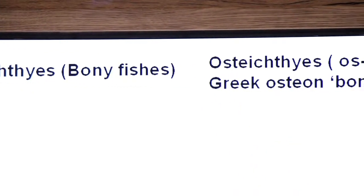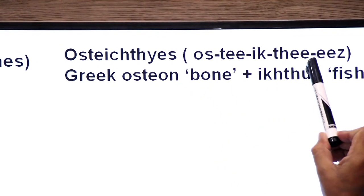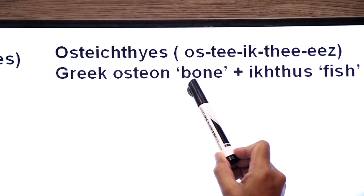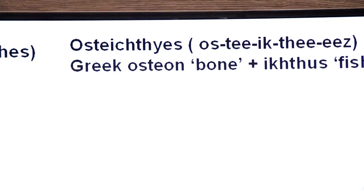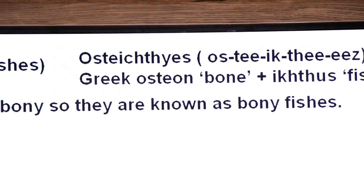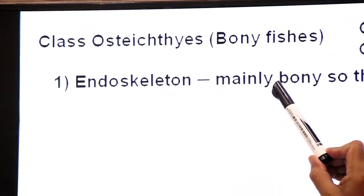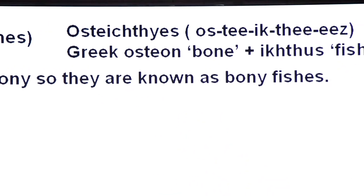How would you pronounce Osteichthyes? It comes from Greek language. Osteon means bone plus Ichthys means fish. They are known as bony fishes due to the nature of their endoskeleton. Dear students, their endoskeleton is mainly bony, so they are known as bony fishes.